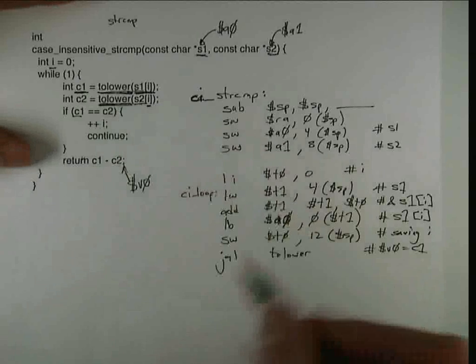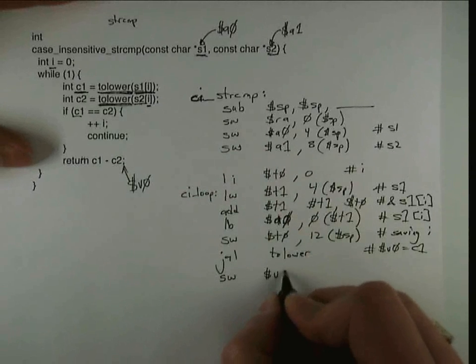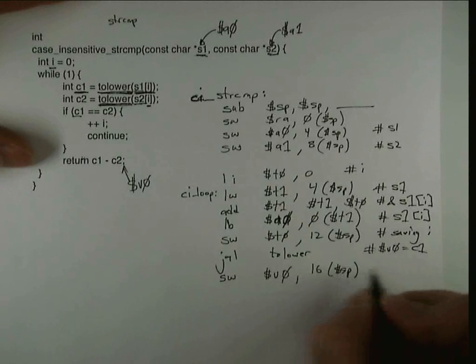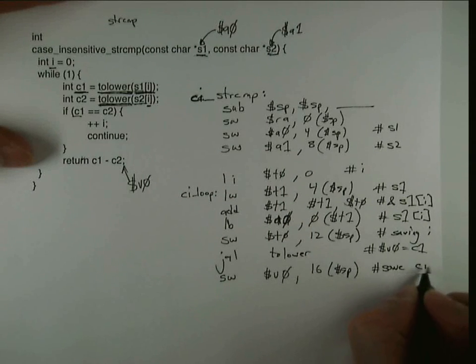I'm just going to go ahead and save that right away. So V0 I'm going to save into 16 offset of the stack pointer. So I'm going to save C1.